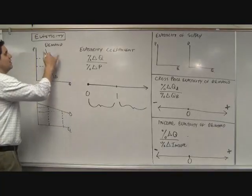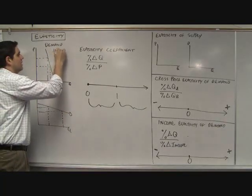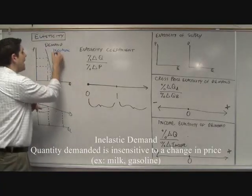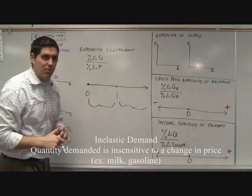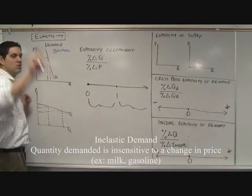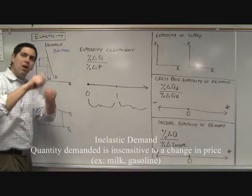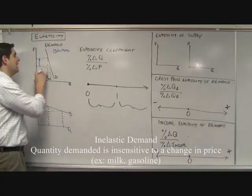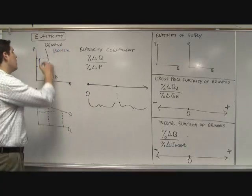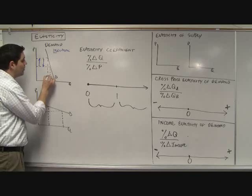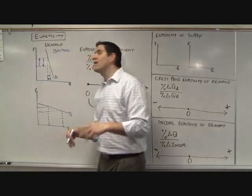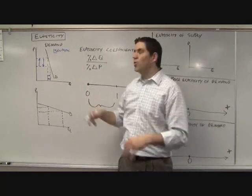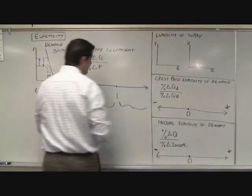The first type is inelastic demand. Inelastic means quantity is very insensitive to a change in price. So price goes up a whole lot, but quantity decreases only a little bit. The law of demand applies, but quantity doesn't change by very much. A perfect example is gasoline — when the price goes up, people will buy a little bit less but not a whole lot less.